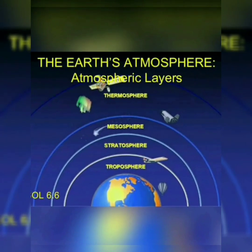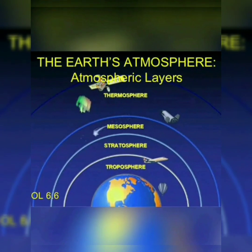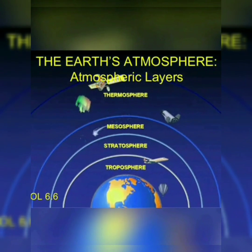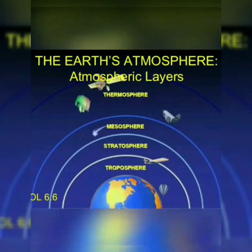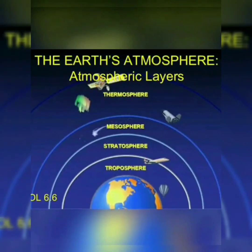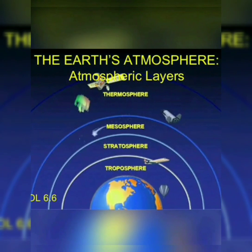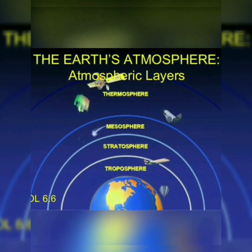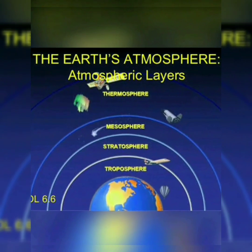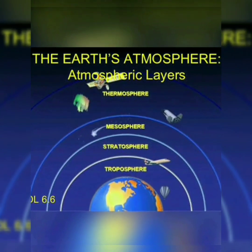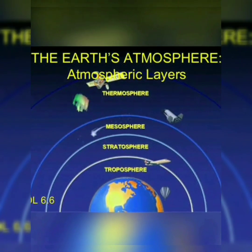And 'sphere' means a round or spherical shape. Our atmosphere is surrounding the Earth — since the Earth is round, the atmosphere surrounding it is also round in shape. That is why it is called atmosphere. Now, before going to the layers of the atmosphere, we have to understand the protective uses of the atmosphere.